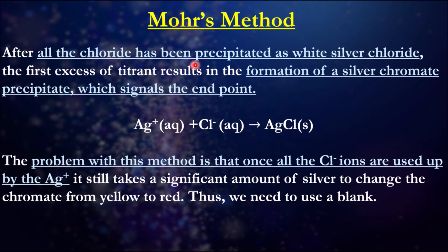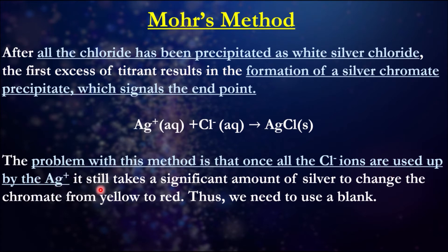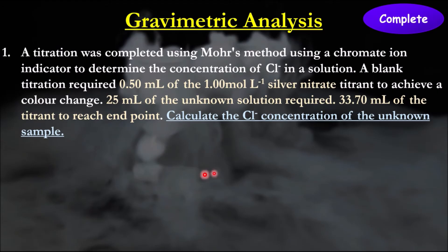Once we've passed the reaction with the halide, we see the formation of silver chromate. The problem with this method is that once all the chloride ions are used up by the silver, it still takes a significant amount of silver to change the chromate from yellow to red. Thus we need to use a blank as a reference starting point.